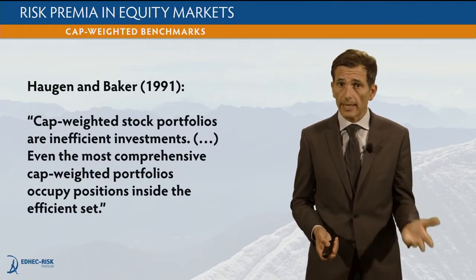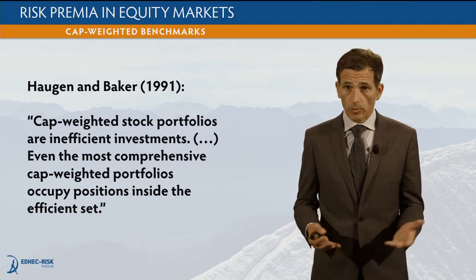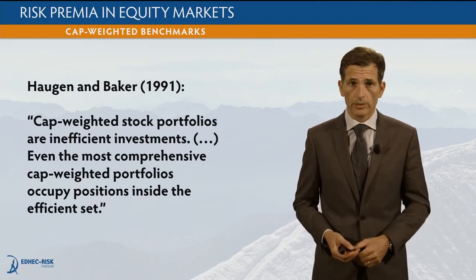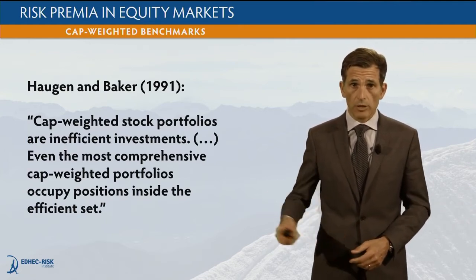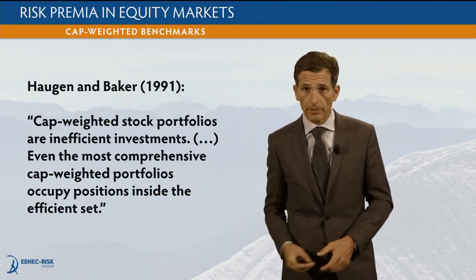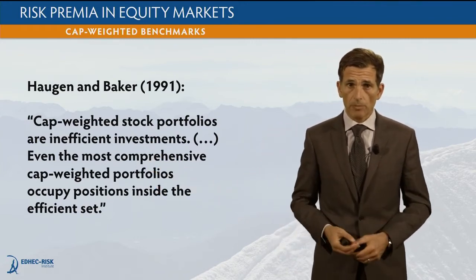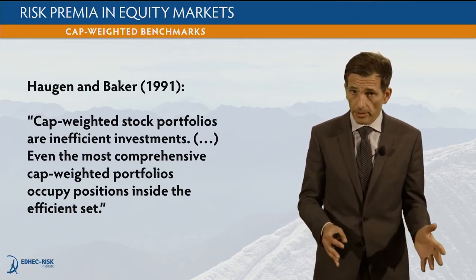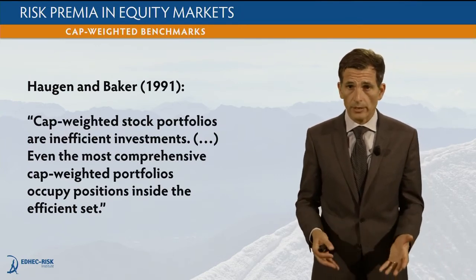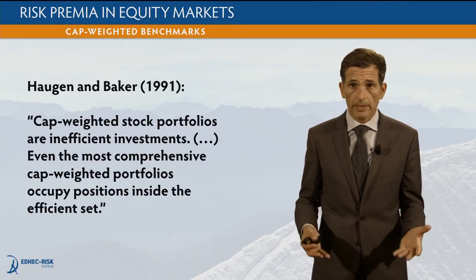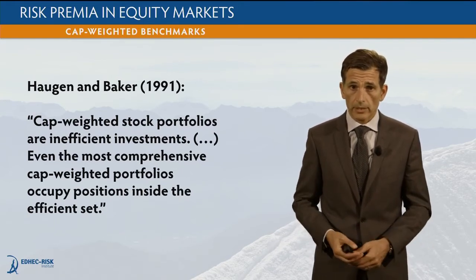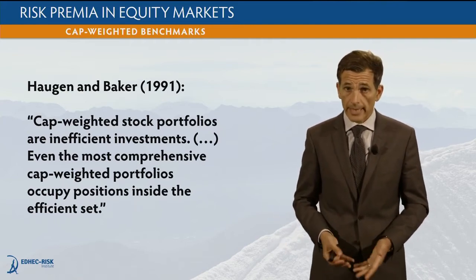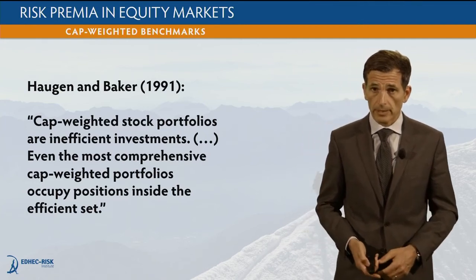The bad news is it has been documented in a number of academic studies. One of the earliest was the paper by Haugen and Baker (1991), which showed that cap-weighted stock portfolios are inefficient investments. They are simple and nice, but they do not allow you to get the highest possible reward in exchange for the risks taken. Even the most comprehensive cap-weighted portfolios occupy positions inside the efficient set — that is one of the key findings of that academic study.